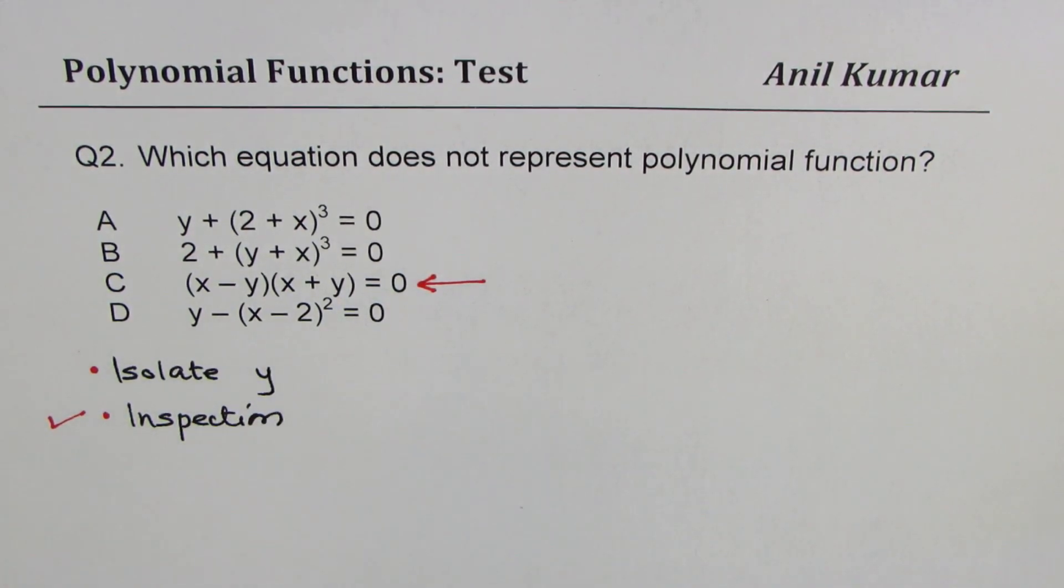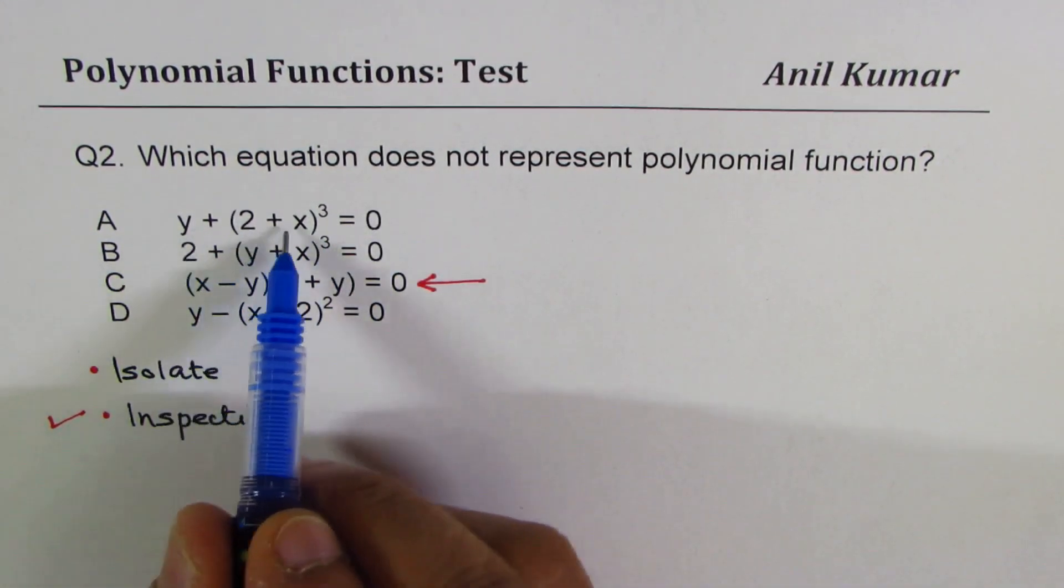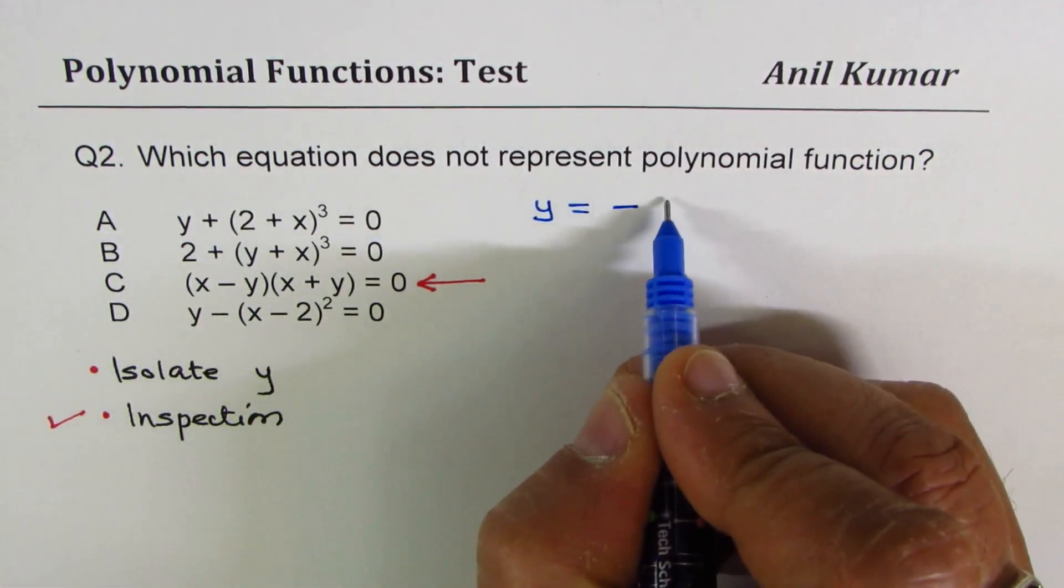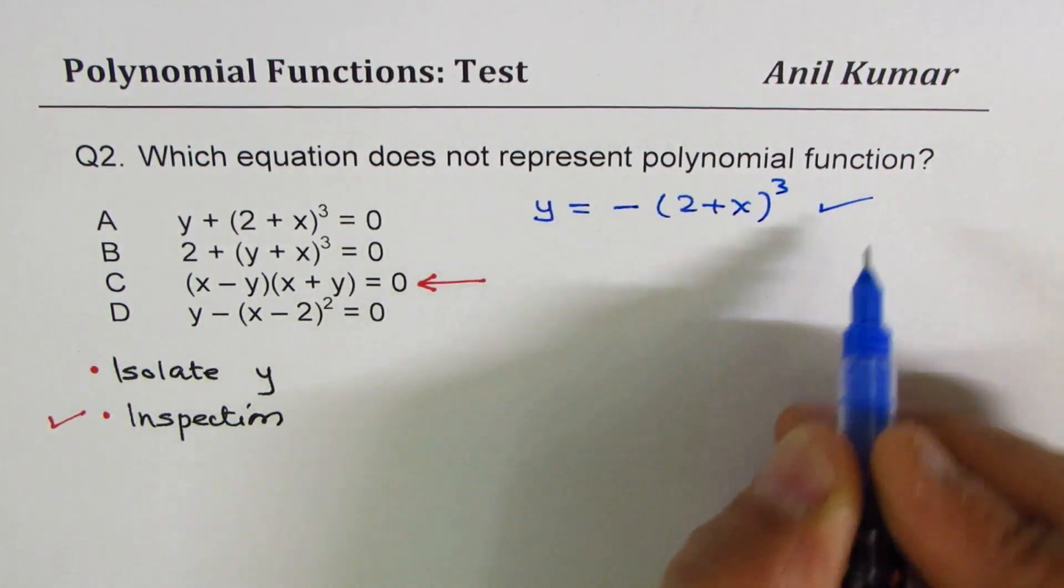So that is by inspection. But let me show you by isolation what I am trying to mean. When I say y plus 2 plus x whole cube equals to 0, I could write this as y equals to minus 2 plus x whole cube. Now this is a polynomial.